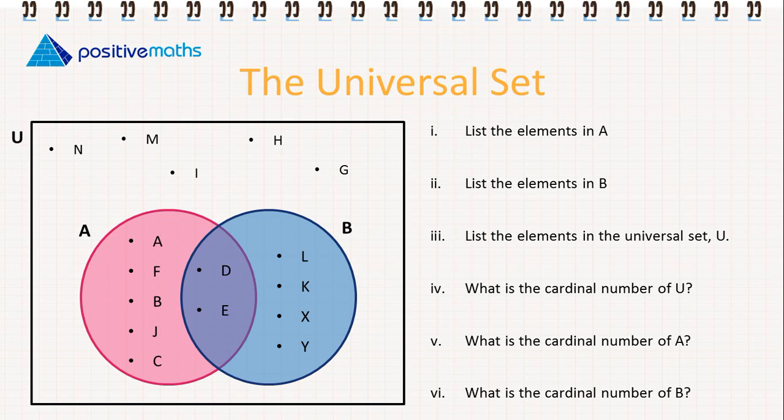So let's look at another activity to further develop our understanding of this concept. First thing we have to do is list the elements in A. So they are A, F, B, J, C, D, and E.